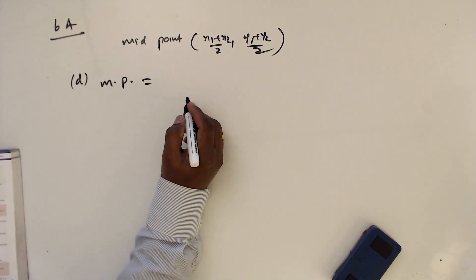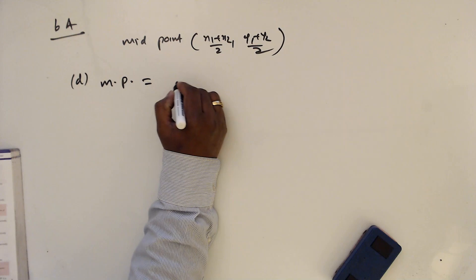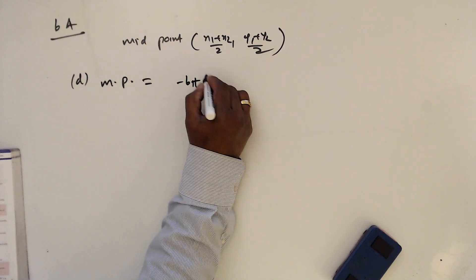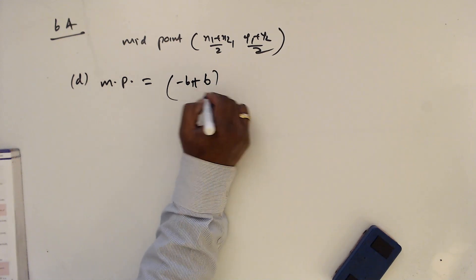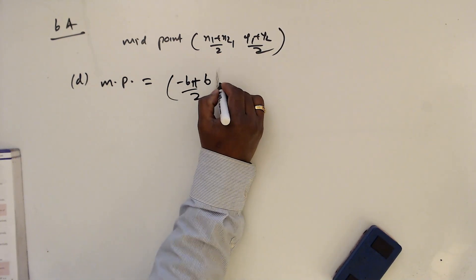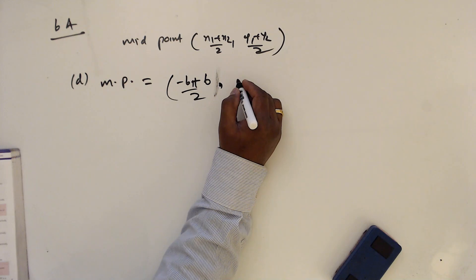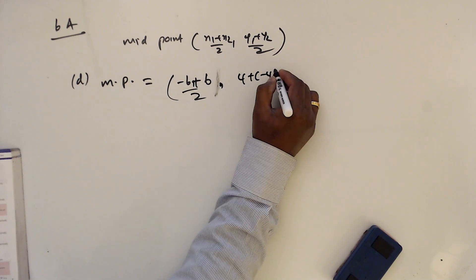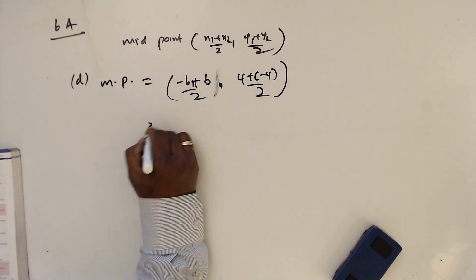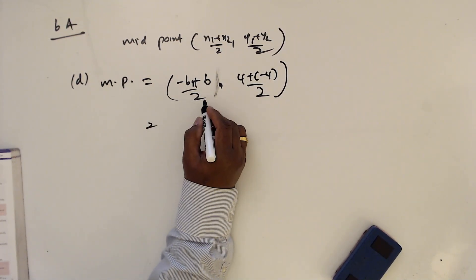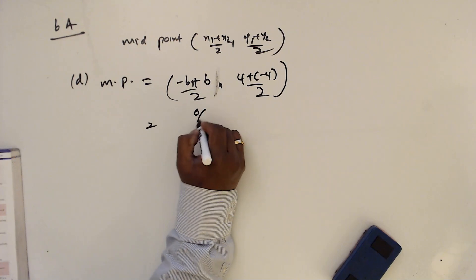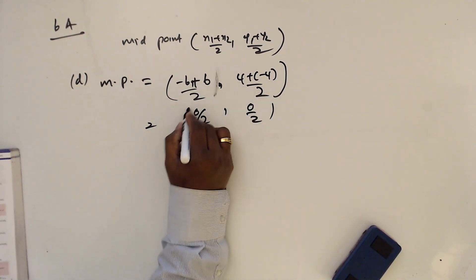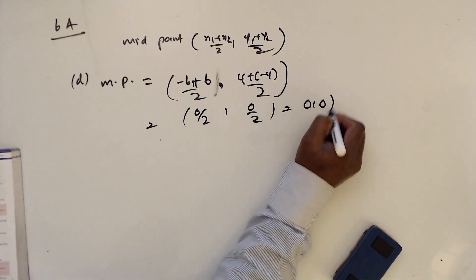Part d: minus 6 plus 6 divided by 2, and 4 plus minus 4 divided by 2. So this is 0 divided by 2, and 0 divided by 2, which means the midpoint is (0, 0).